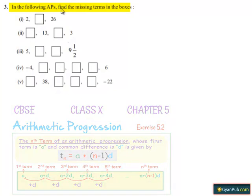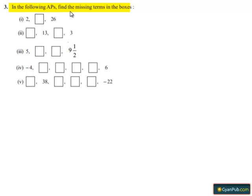Moving on to the third question: in the following arithmetic progressions, find the missing terms in the boxes. For the first part, the first term is given as 2, and the second term is missing. Let it be t2. The third term t3 is given as 26.